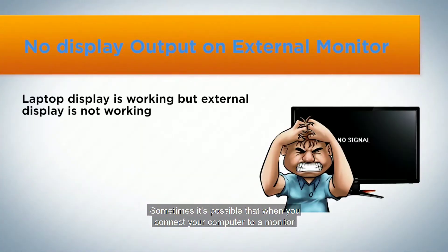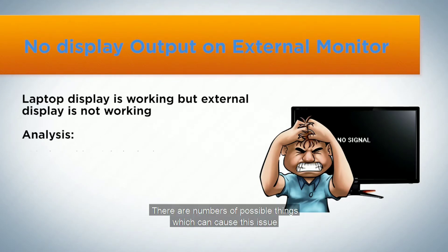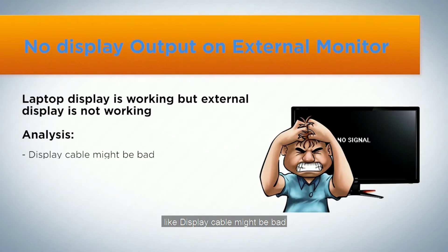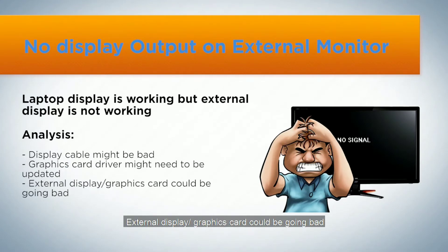Sometimes when you connect your computer to a monitor, the external display remains still and shows nothing, but your computer display works. There are a number of possible things which can cause this issue, like the display cable might be bad, the graphics card driver might need to be updated, or the external display or graphics card could be going bad.